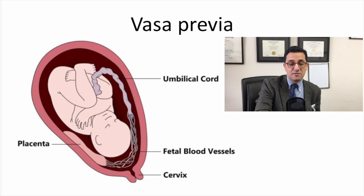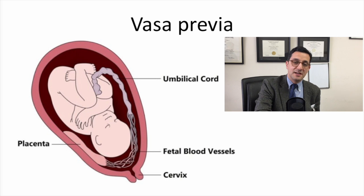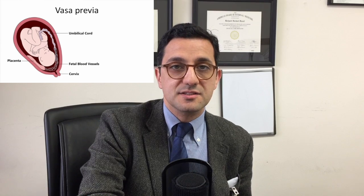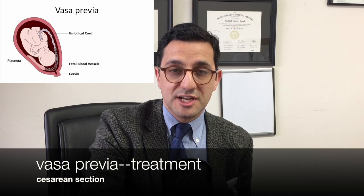The third common antepartum cause is vasa previa, defined as a fetal vessel crossing the internal os. Unlike placenta previa where it's the placenta, here it's a vessel. It is common in twin gestations or with a succenturiate or accessory lobe of the placenta. The classic presentation is bleeding during artificial rupture of membranes immediately followed by fetal heart rate deceleration. Treatment is either a scheduled or emergency cesarean section.